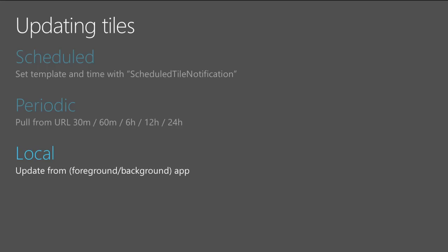Local updates happen from whatever your application is doing while it's running. What's powerful is you can also have a background task — we have a session on background execution coming up. A foreground app can obviously update its tile, but a background task can also interact with all your tiles and keep them up to date without the user ever opening your application. This is how you keep tiles updated when they're pushing information out to users.